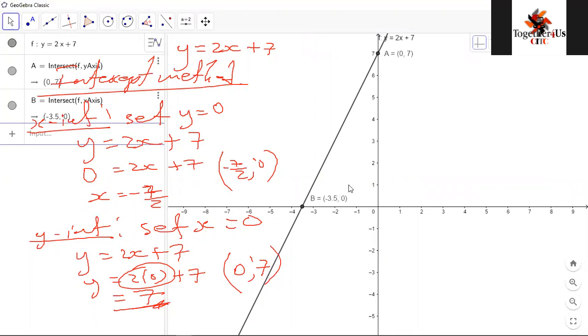And of course, 3.5 is 7 over 2. So this is still the correct thing. What you guys would do, ideally...